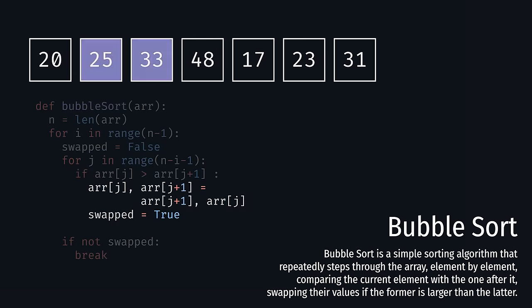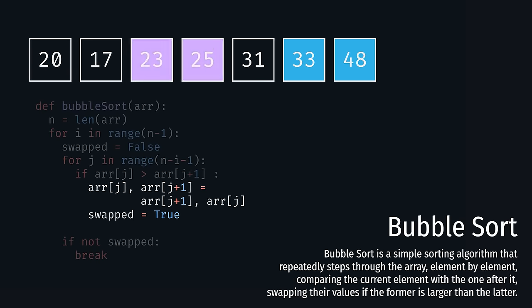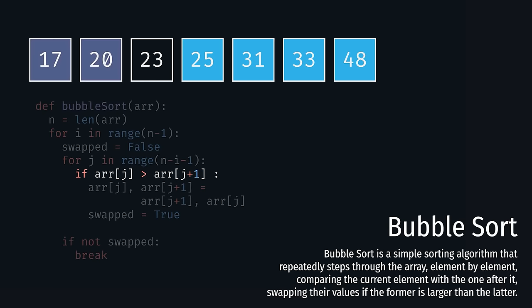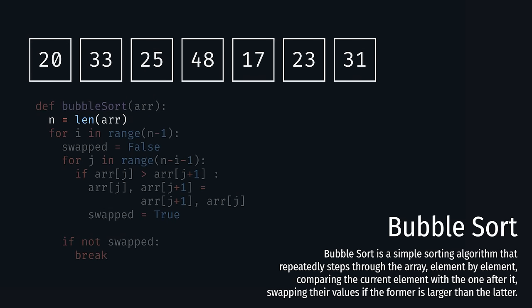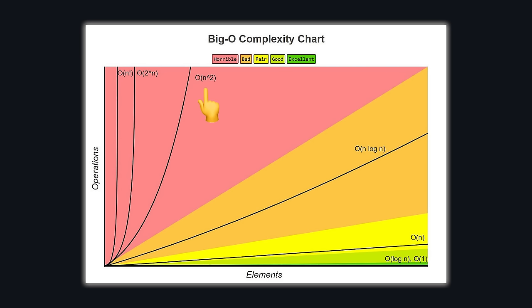Let's take a look at Bubble Sort — helping programmers learn how not to sort things since the 1950s, but a great representation of how sorting algorithms work. Bubble Sort is a simple sorting algorithm that repeatedly steps through the array element by element, comparing the current element with the one after it, swapping their values if the former is larger than the latter, repeating again and again until the array is finally sorted. The outer for loop represents each iteration through the entire array, while the inner for loop iterates over the unsorted part, where the if statement compares adjacent elements, bubbling the larger elements to the top. It has an average and worst-case time complexity of O(n²), which means it's not a very good choice for sorting things.